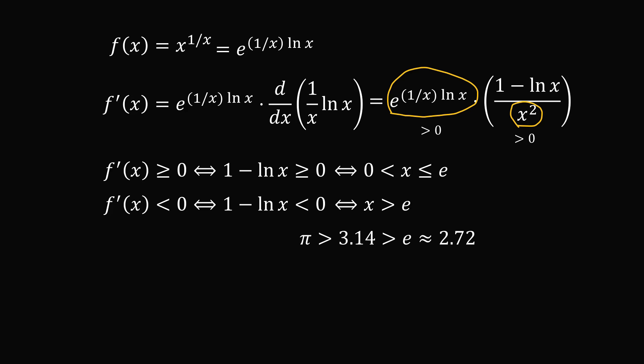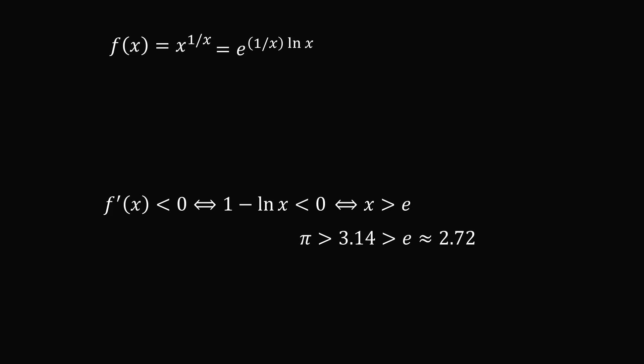Now, pi and 3.14 are both larger than e, which is approximately 2.72. So we want to look at this case when the derivative is less than 0. If the derivative is less than 0, that means the function f(x) is decreasing.